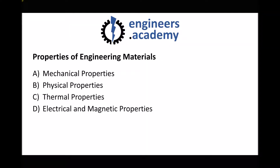Hello, this is Andy from the Engineers Academy. The starting point for this materials unit is to introduce some of the material properties of different engineering materials. We're going to split these into four categories: mechanical properties, physical properties, thermal properties, and finally electrical and magnetic properties.